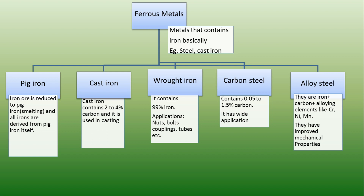In medium carbon steel, carbon content varies from 0.3% to 0.6%. In high carbon steels, carbon percentage varies from 0.6% to almost 1.5%.